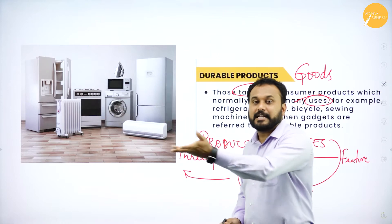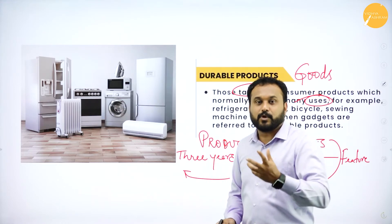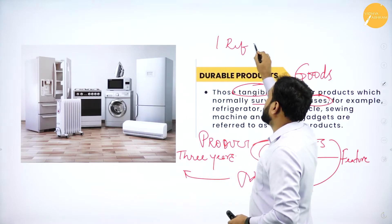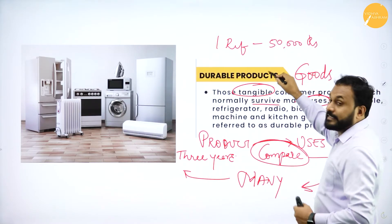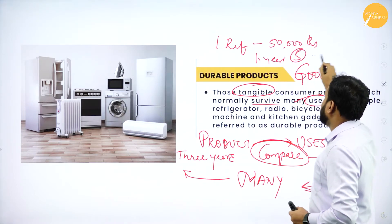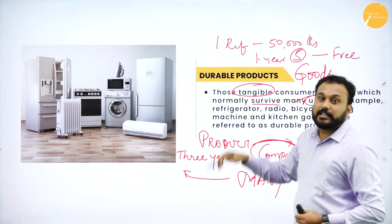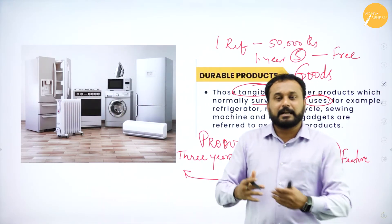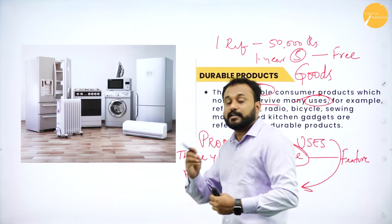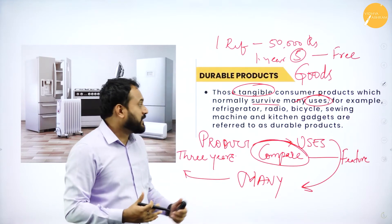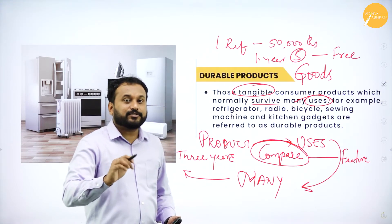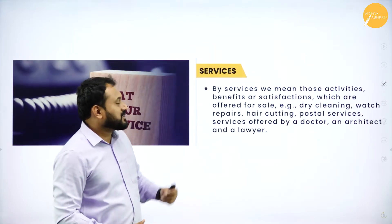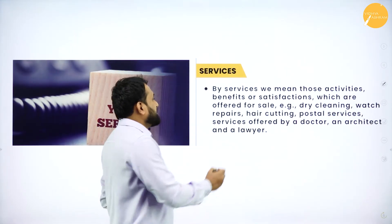In durable products, companies offer promotions like one year free service when you buy a refrigerator for ₹50,000, or a free mat and screen cleaning wiper with a television purchase. These offers happen because durable products are used for more than three to four years. Services are defined as those activities which benefit or provide satisfaction and are offered for sale.